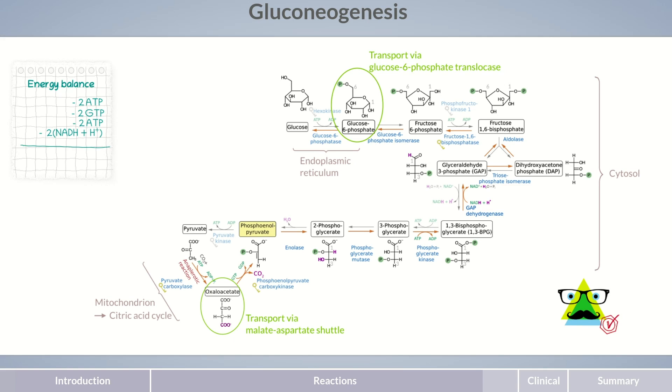For the energy balance of gluconeogenesis, a total of 4 molecules of ATP, 2 GTP and 2 reducing equivalents of NADH and H+ are required to produce 1 molecule of glucose. If the physiologically produced glucose is broken down again later in glycolysis, only 2 reducing equivalents of NADH and H+ and 2 ATP molecules can be recovered.